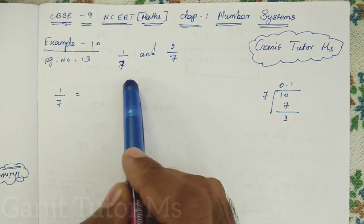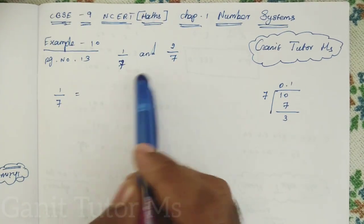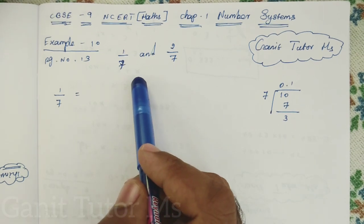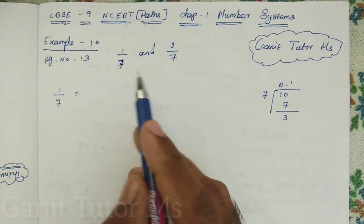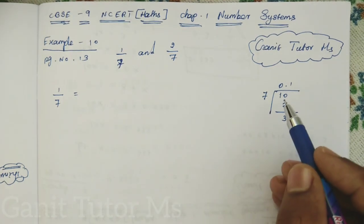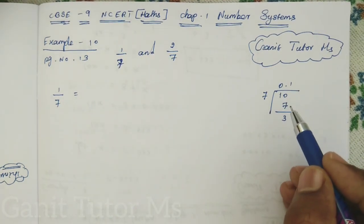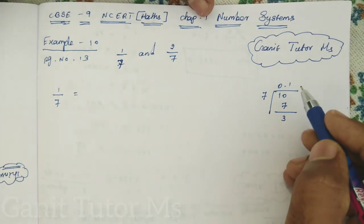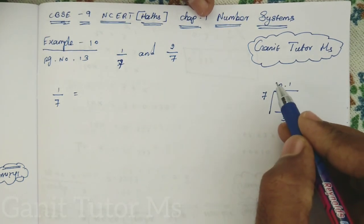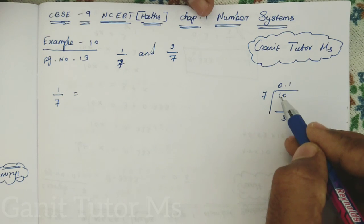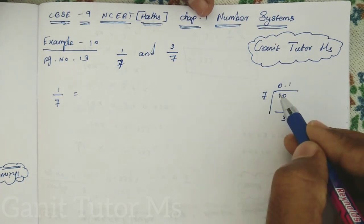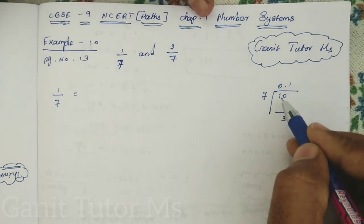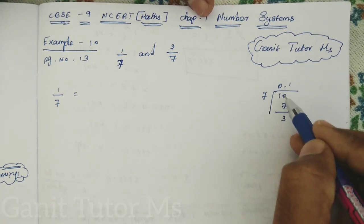When we want to find the irrational number between two given numbers, first you should write in a decimal form of the given numbers. So 1 by 7 decimal expansion, you can use a normal long division method to find the decimal expansion of a given rational number. So 1 by 7, it means 1 can be divided by 7. So 1 should be inside, 7 outside. Then it is not possible, so I can add a 0 and put a dot.